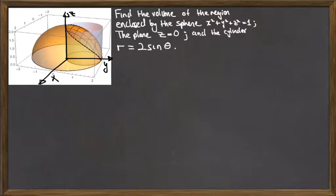In this video, we'll find the volume of the region enclosed by the sphere given by x squared plus y squared plus z squared is equal to 4.